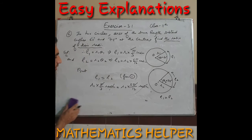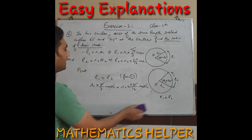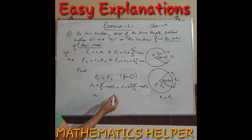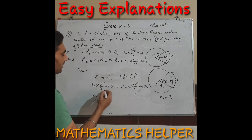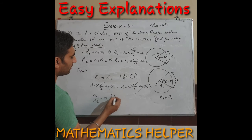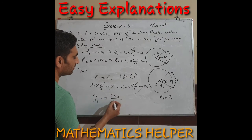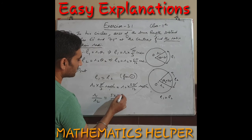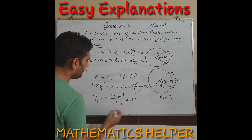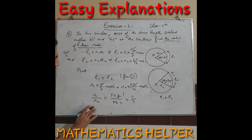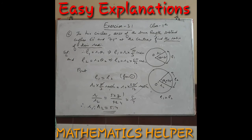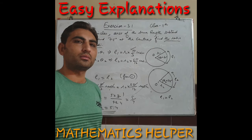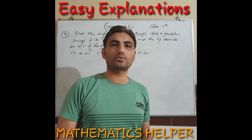Solving for the ratio of radii: r1/r2 = 5/4, so r1 : r2 = 5 : 4. This is the answer to question six.